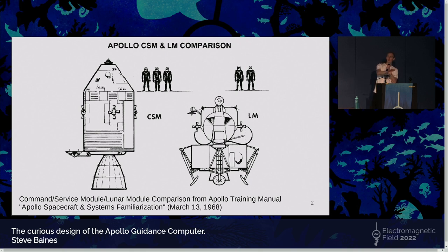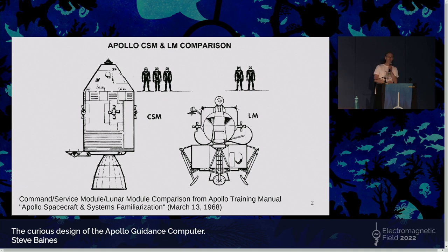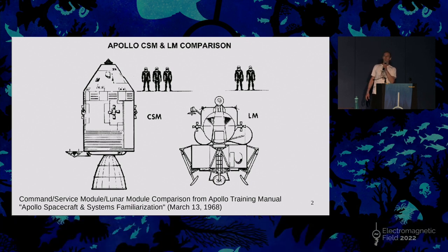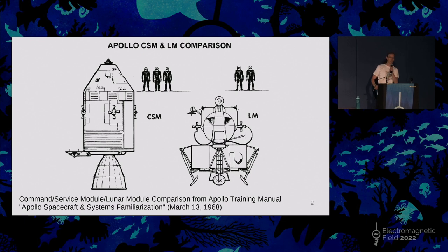There were basically two spacecraft to get to the moon. The command and service module on the left — the triangular bit at the top is the command module, where the crew lived, and everything behind that is fuel tanks and engine. On the right you have the LEM, the lunar lander, which was used to actually land on the moon. Both of those had one Apollo Guidance Computer in them — identical hardware but slightly different software.